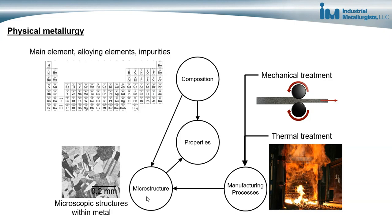Microstructure refers to microscopic structures within a metal. This includes grains and phases and the arrangement of the different phases within a metal, as well as structures like dislocations and arrangement of atoms. We can use composition and manufacturing processes to modify the microstructure — engineering the phases present and the grains — in order to get different properties.